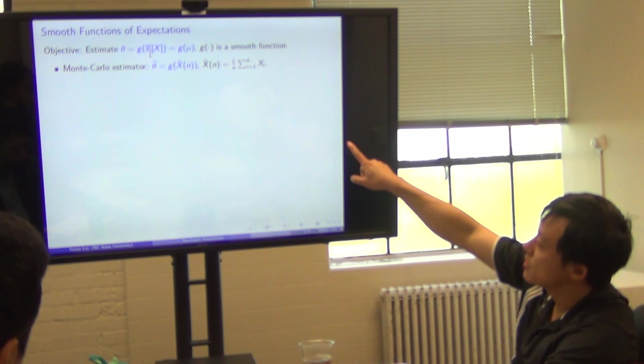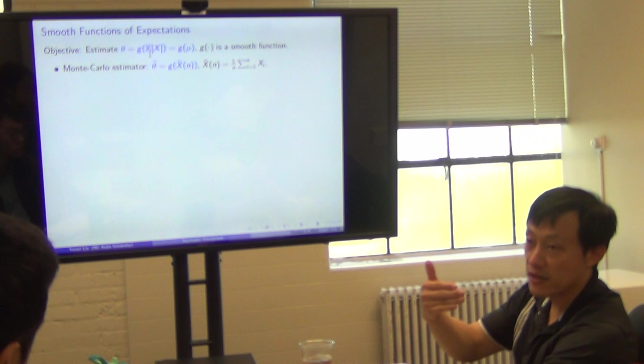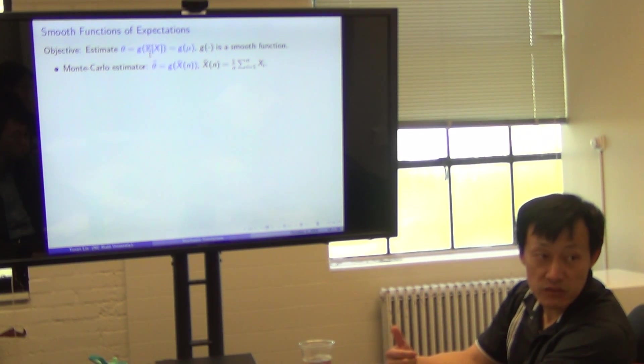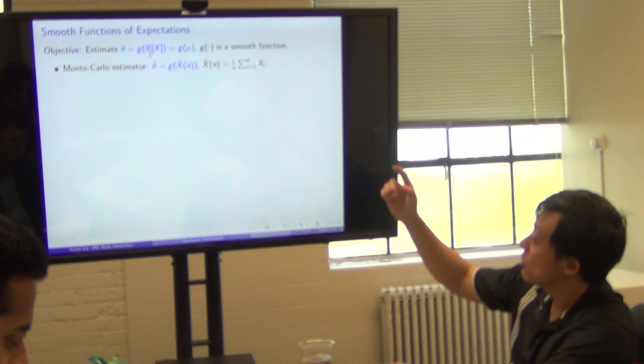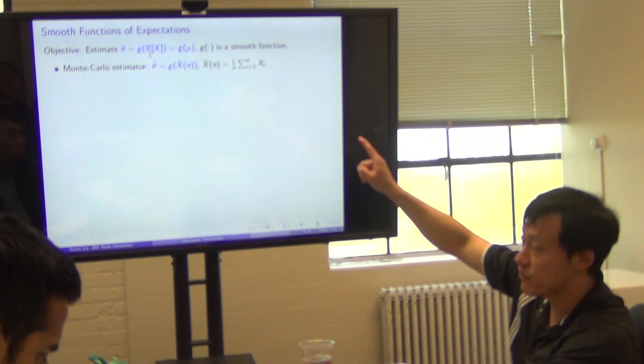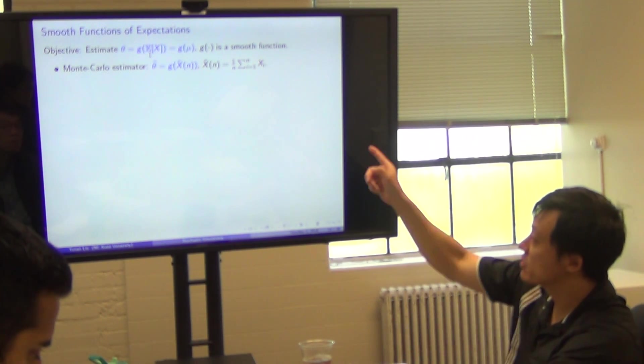For instance, if your estimation of E is not accurate, you have fluctuation around that value. But you need to know the structure of g, like how sensitive is g, like the derivative, second order derivative, to understand the error of the estimation of g(E). You can see that the derivative of g, first order, second order, will be involved here, to construct confidence interval for this theta.